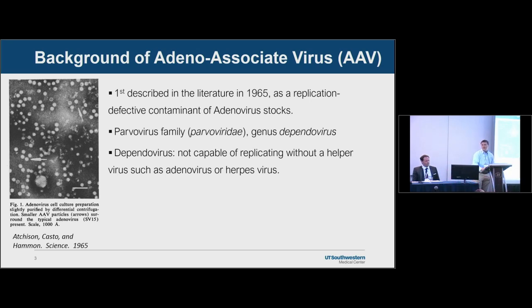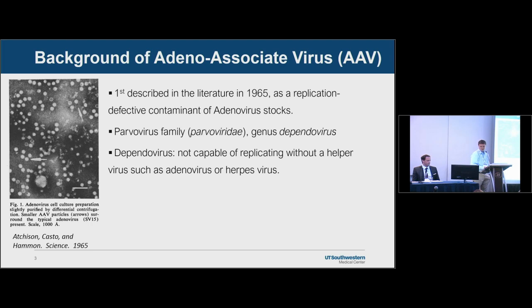AAV is in the parvovirus family. It has a protein capsid and is non-enveloped. It was placed in the genus Dependovirus because AAV is unique in that it is not capable of replicating itself — it needs a helper virus such as adenovirus or herpes virus to prime the cell and enable replication and transmission. In that first electron micrograph, you can see adenovirus is quite large with a scale bar of 100 nanometers, and AAV is about one-fifth the diameter. You can even see empty and full particles on that stain.